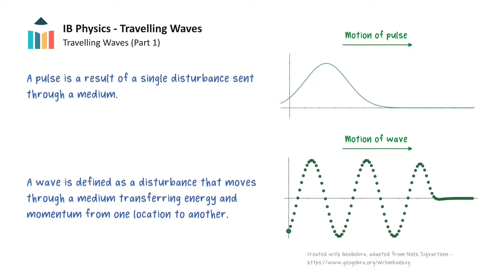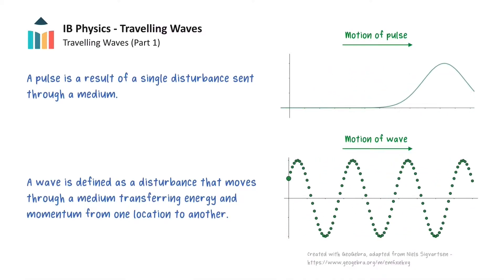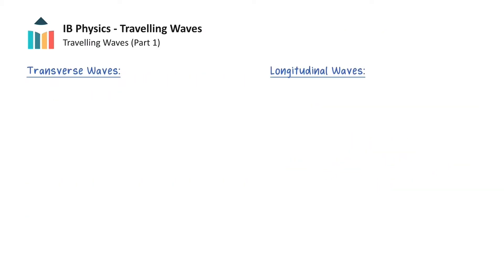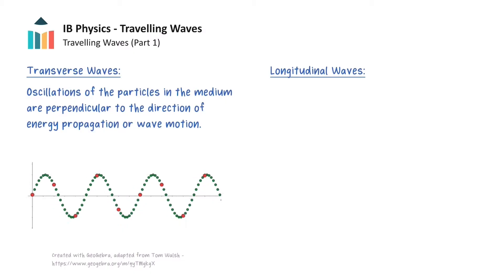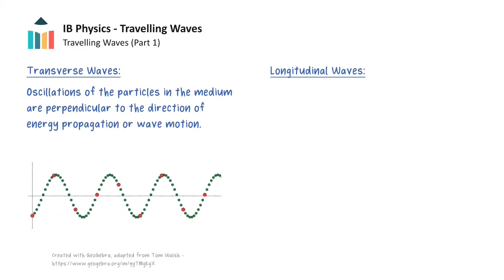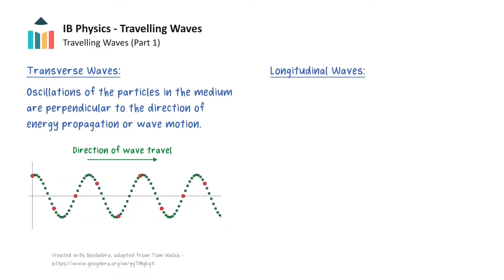The medium is the material through which the wave travels. It might be something like the strings on the guitar, or the air for sound waves. One of the most common ways to categorise waves is based on the movement of the particles in the medium relative to the wave's direction of motion. If the oscillation of the particles in the medium is perpendicular to the direction of wave travel, we call this a transverse wave.